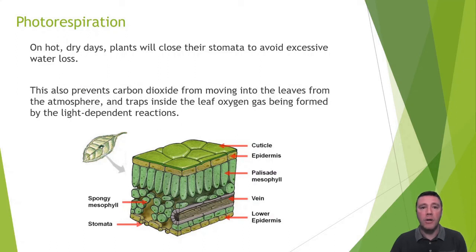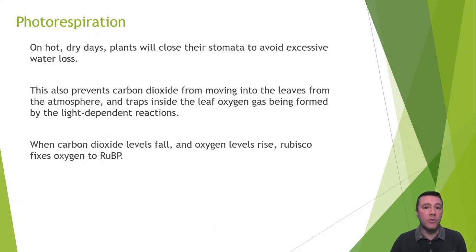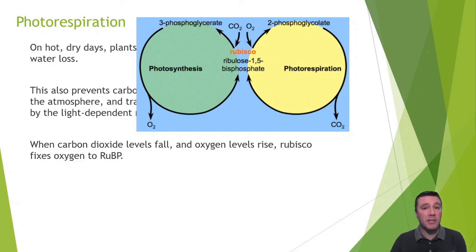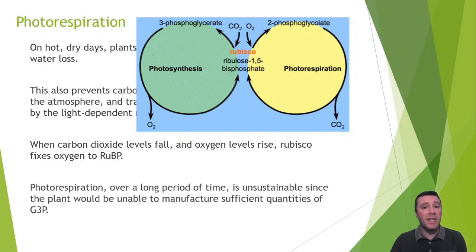As a side effect of this closure, carbon dioxide is no longer able to enter the leaf, and the oxygen being produced by the light reactions is trapped inside the leaf in a porous area called the spongy mesophyll. With the stomata closed, the level of carbon dioxide falls as the gas is consumed by the first stage of the Calvin cycle, and oxygen levels rise. The enzyme RuBisCO, which is supposed to fix carbon dioxide to RuBP, will instead fix oxygen to it. This fixation of oxygen to RuBP, called photorespiration, prevents the formation of G3P molecules since no carbon is being added. Over long periods of time, photorespiration is unsustainable since the plant would be incapable of manufacturing enough G3P to survive.